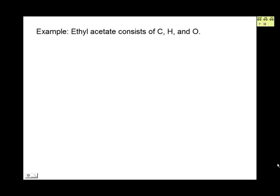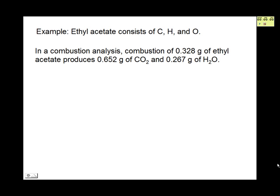Let's do an example. We are told that the compound ethyl acetate consists of carbon, hydrogen, and oxygen. A combustion analysis is a procedure in which a given mass of a hydrocarbon is burned. When hydrocarbons are burned, they produce carbon dioxide and water. By measuring the amount of CO2 produced, the mass of carbon in the sample can be determined, and by measuring the amount of H2O, the amount of hydrogen can be determined. A 0.328 gram sample produces 0.652 grams of CO2 and 0.267 grams of H2O.